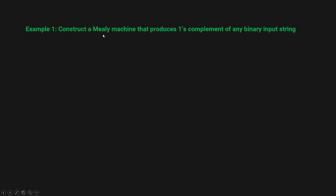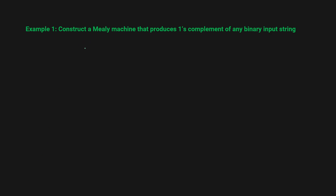The first example is: construct a Mealy machine that produces the one's complement of any binary input string. First we will understand what one's complement means. A binary input string has only zeros and ones — for example, 0 1 0 0 1. The one's complement reverses each bit: if it is 0 you make it 1, if it is 1 you make it 0. So 0 1 0 0 1 becomes 1 0 1 1 0.